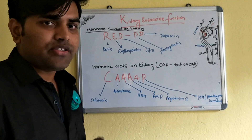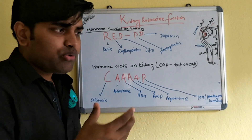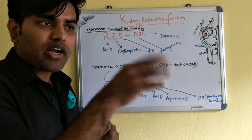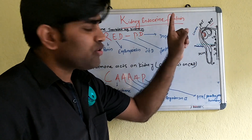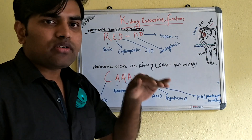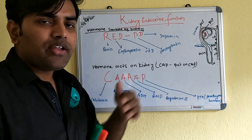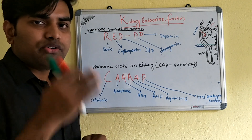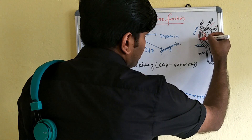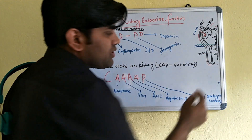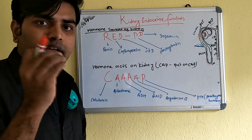Erythropoietin is normally secreted from the peritubular capillaries of the kidney. Although 20–25% of cardiac output goes to the kidney — with high pressure in the glomerular capillaries — the peritubular capillaries have low blood flow and low blood pressure. If blood pressure drops for any reason, the peritubular capillaries sense hypoxia and produce erythropoietin.